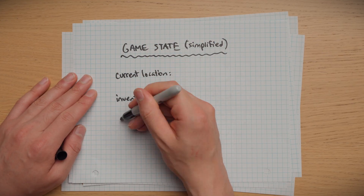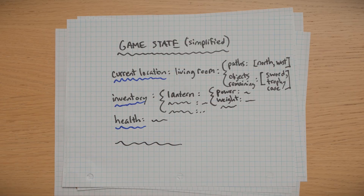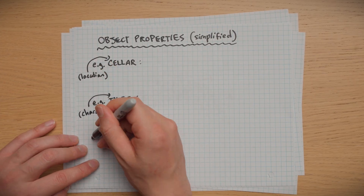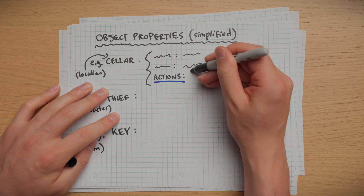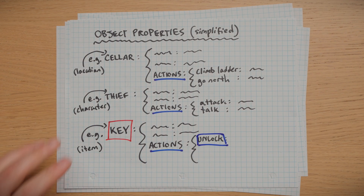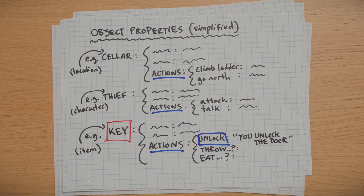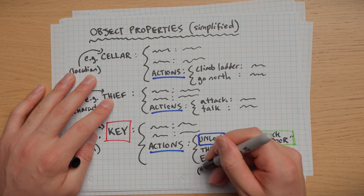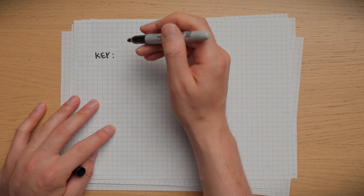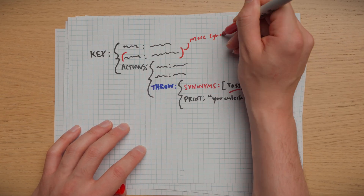Game state is straightforward — you keep track of and update the player's current location, inventory, and other stats. This determines the kinds of objects and actions you have access to. Object properties are pretty interesting: every single thing in the Zork world is considered an object — locations, characters, items, you name it — and each one is associated with a list of different actions that can be performed with or on them. For example, keys can unlock doors, or be thrown. In the code, every single action-object combo results in a pre-written response. Zork changes the internal game state to reflect what just happened, and also prints a stored response to the console. Every action and object is also stored with a list of synonyms, so the computer recognizes as wide a range of inputs as possible.